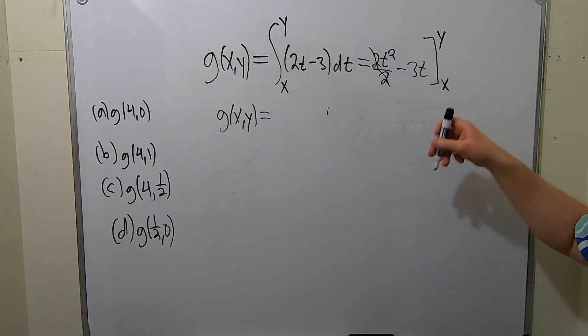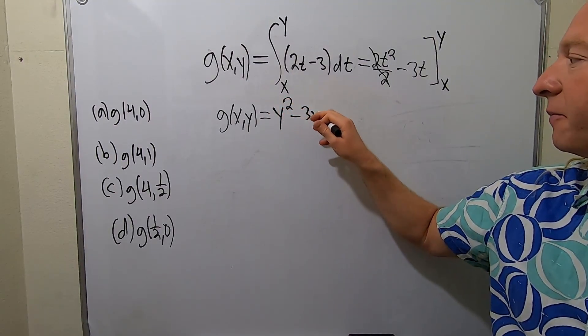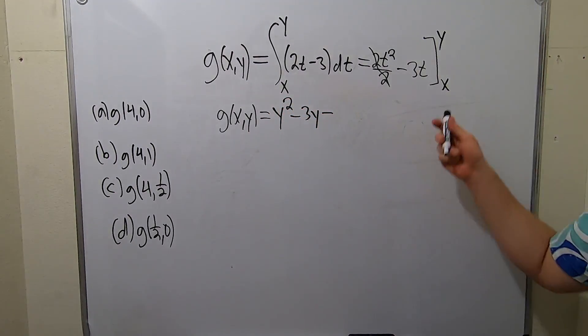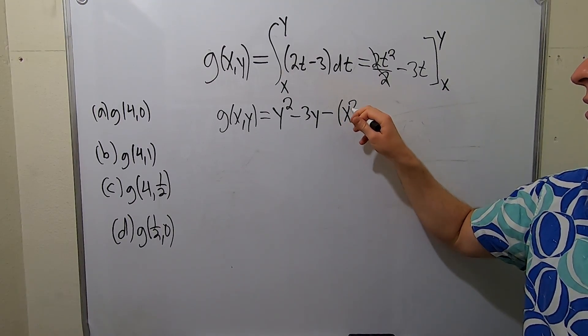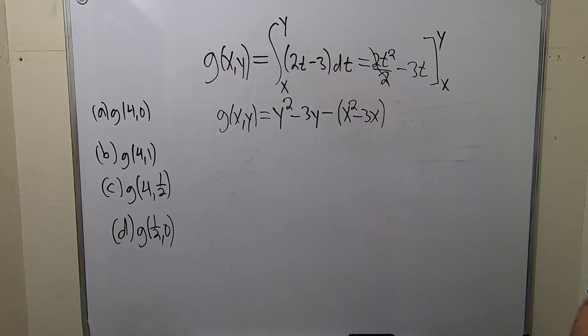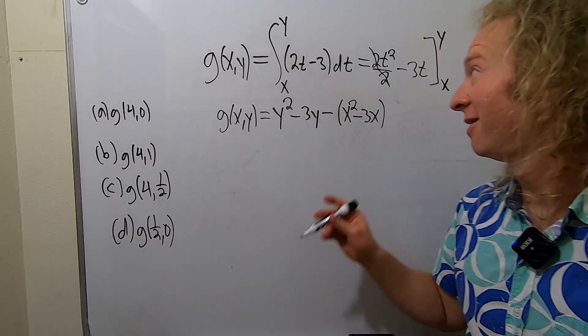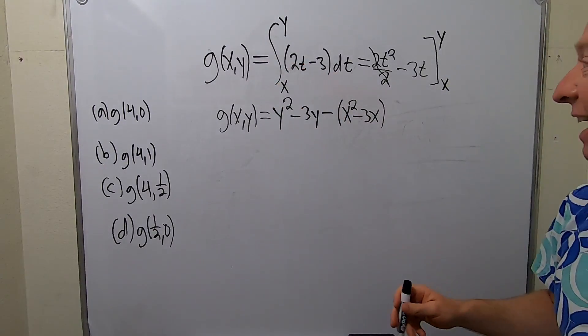Now you plug in y first so you end up with y squared minus 3y, and then you plug in x. So parentheses x squared minus 3x. So far it's been a lot easier than I expected. I thought we were going to get some fractions. Thankfully there was a 2 there that saved the day.